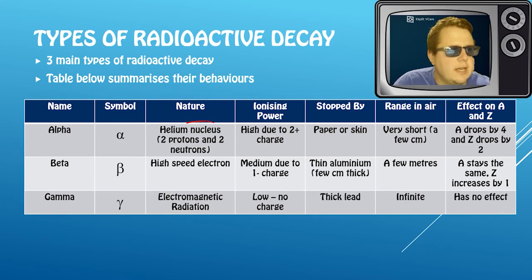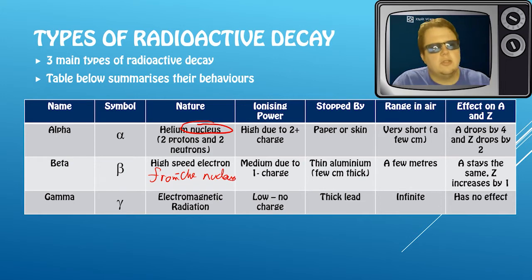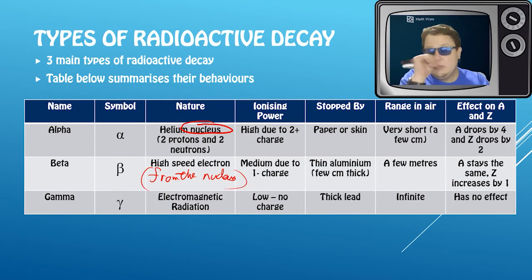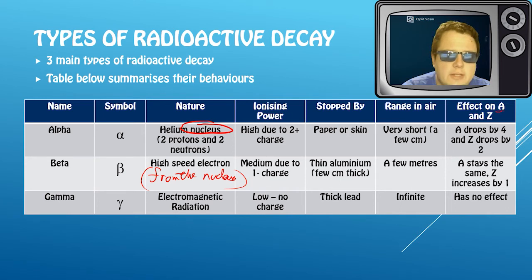For an alpha particle, probably as well, but it's worthwhile putting in here that it's a high-speed electron from the nucleus. But you don't always need to put that down. It's not one of the orbital electrons, it is one that has been emitted extra to that. And you can see here the ranges and things like that, and you can see the effect on A and the effect on Z.